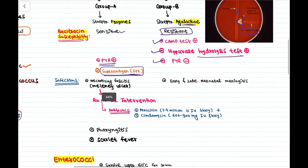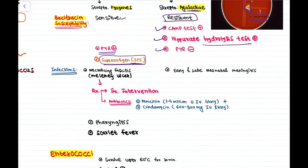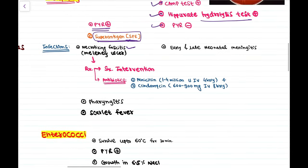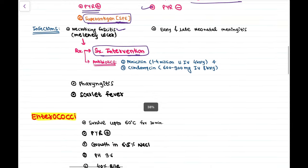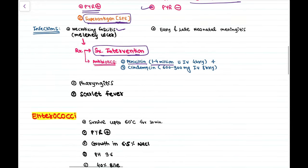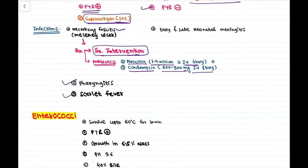Infections caused by Streptococcus pyogenes include necrotizing fasciitis (also called Meleney's ulcer), where surgical intervention is the primary treatment. Antibiotics include penicillin 1–4 million units IV every 4 hours plus clindamycin 600–900 mg IV every 8 hours. It also causes pharyngitis and scarlet fever.